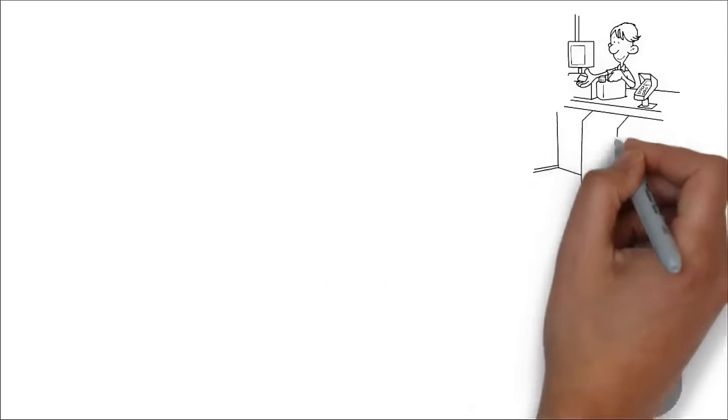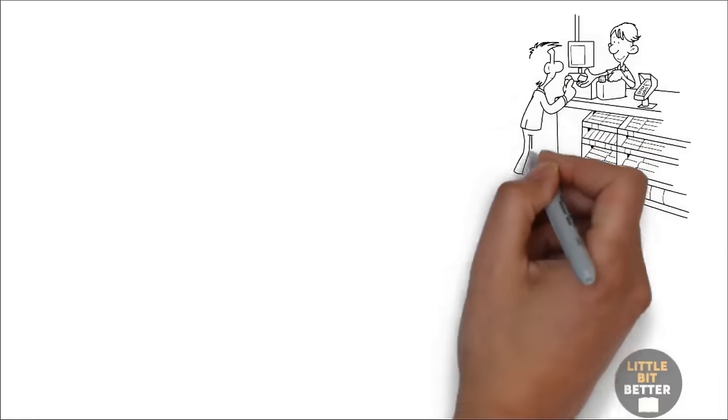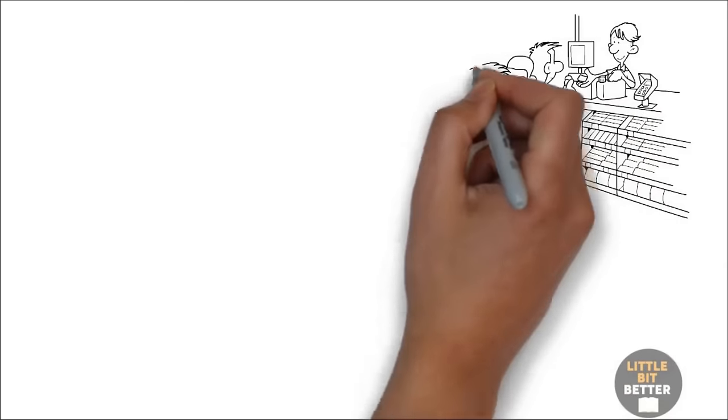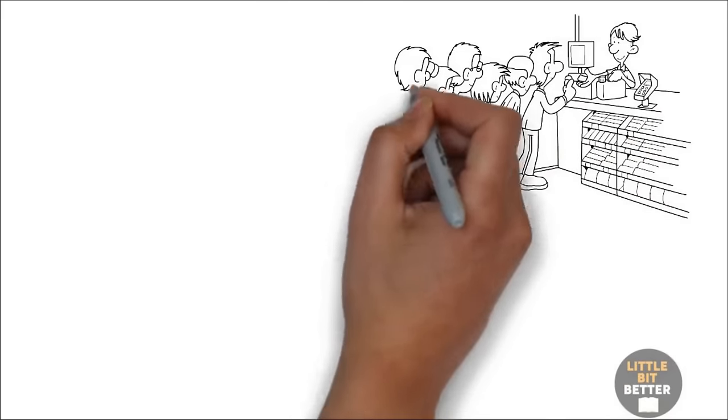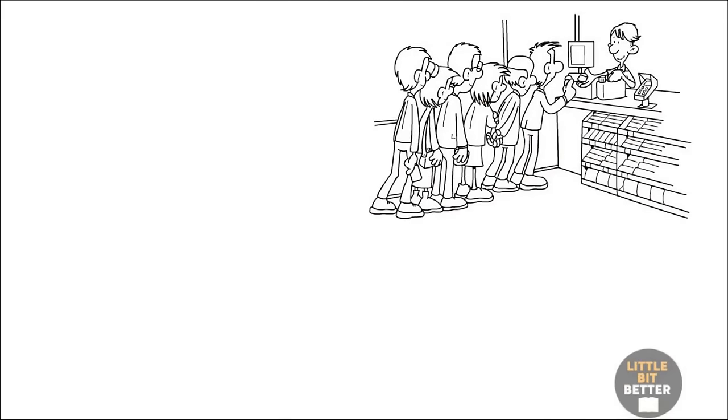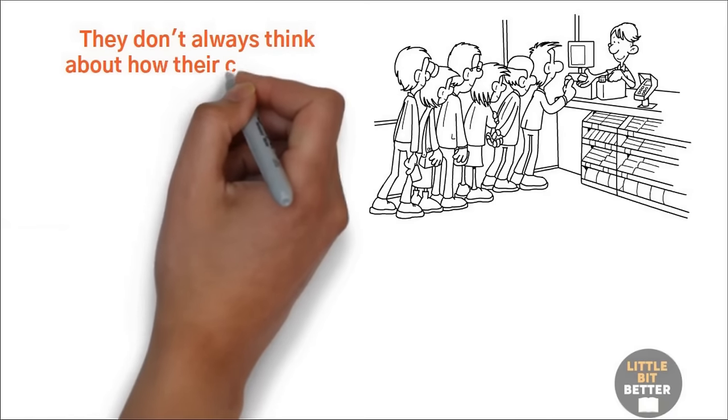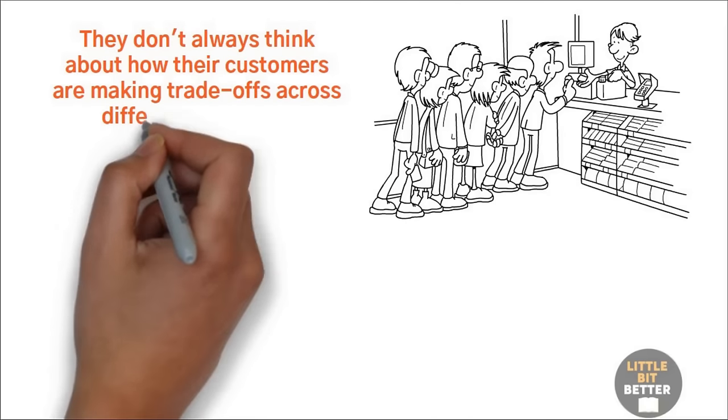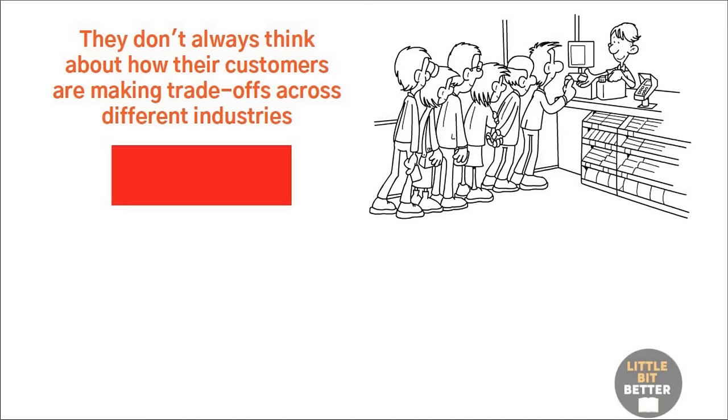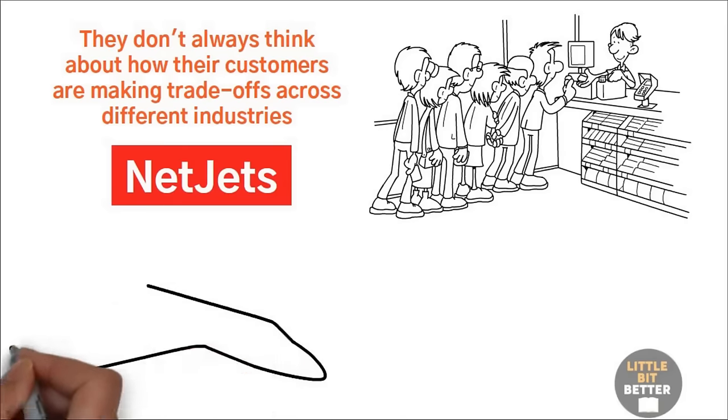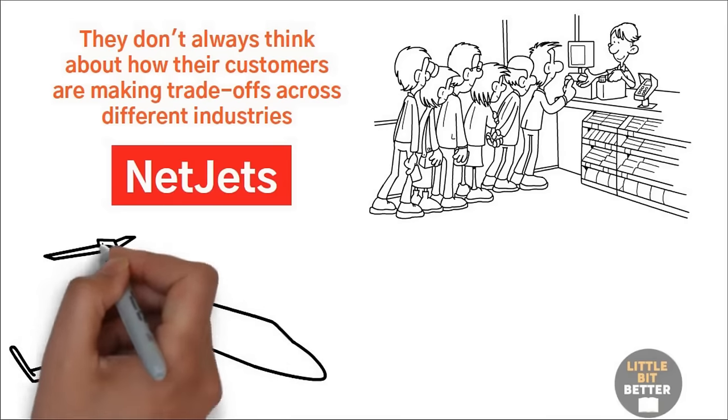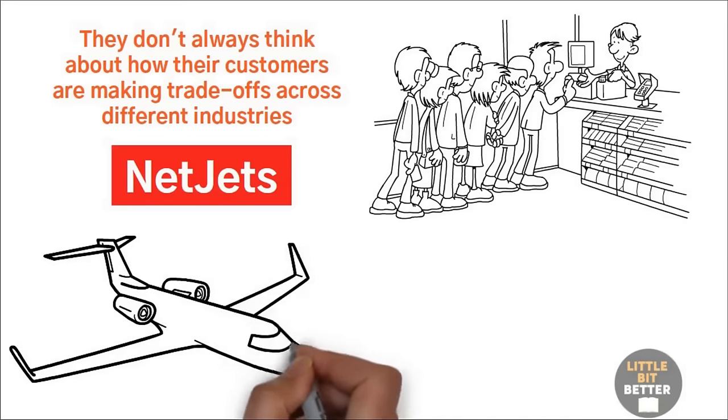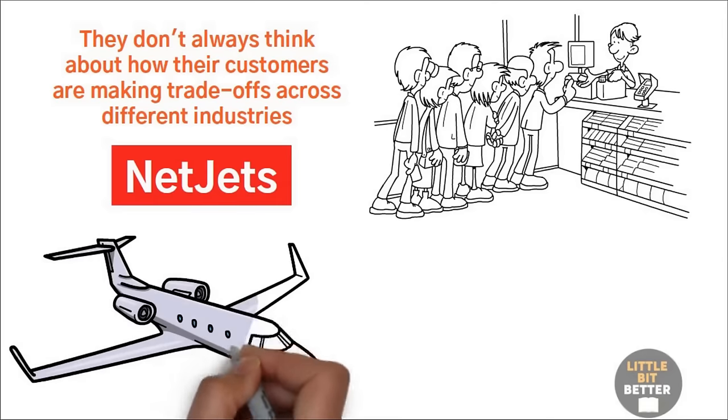When people make purchasing decisions, they often think about their options unconsciously. They consider what they want and how they can achieve it. However, when companies sell products or services, they don't always think about how their customers are making trade-offs across different industries. A company called NetJets observed that business travelers in the airline industry had two choices. They could fly on a commercial airline or the company could purchase its own aircraft.